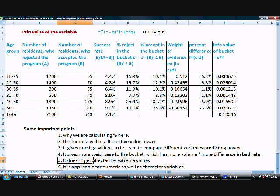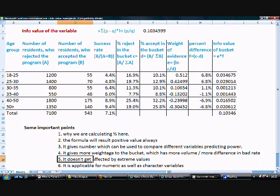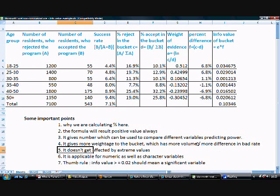This particular formula is applicable for numeric as well as character variable. The reason is very simple: what you need is just the percentage of good and percentage of bad. In case of character variable, the buckets are naturally available. In case of numeric variable, you create the bucket as you are creating here, 18 to 25, 25 to 30, like that. It is applicable for numeric and character variables, and in one go you can select the variables which are more important. Thumb rule is that when the info value is greater than or equal to 0.02, it should mean a significant variable.